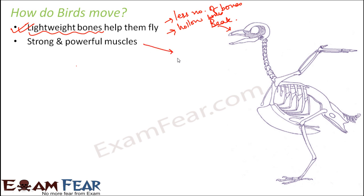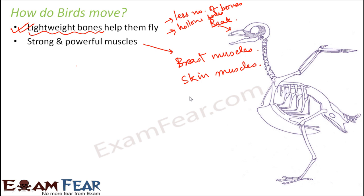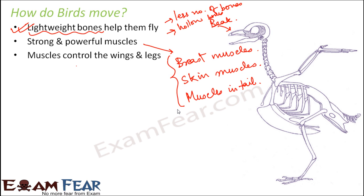The breast muscles are the strongest and they control the wings. Skin muscles control the feathers, because the feathers of the bird can also move — the feathers adjust during flight and that is controlled by the skin muscles. Muscles in the tail help birds to change direction during flight. All of these muscles together help birds to fly, and the leg muscles control the movement of the legs for those birds which can walk.